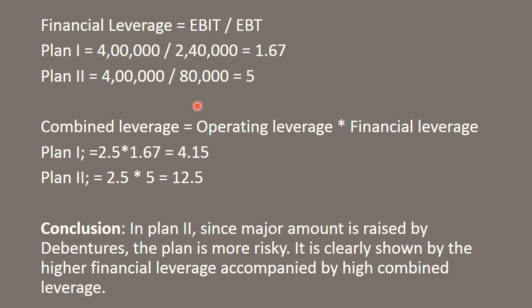Now, calculation of combined leverage. Operating leverage multiplied by financial leverage gives us combined leverage. For Plan 1: 2.5 multiplied by 1.67 = 4.15 — that is the combined leverage for Plan 1. For Plan 2: 2.5 multiplied by 5 = 12.5, which is quite high as compared to Plan 1. That is the combined leverage value for Plan 2.